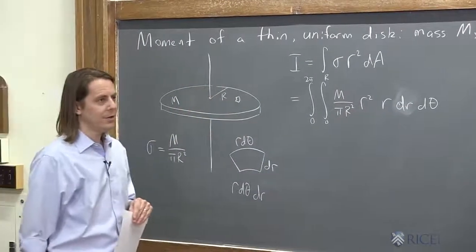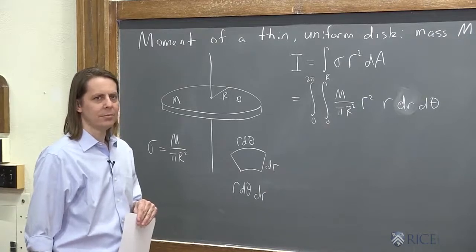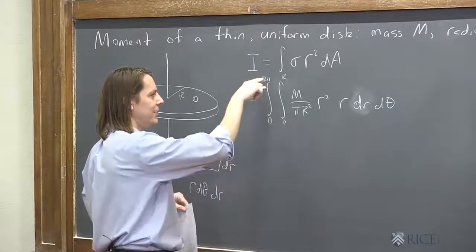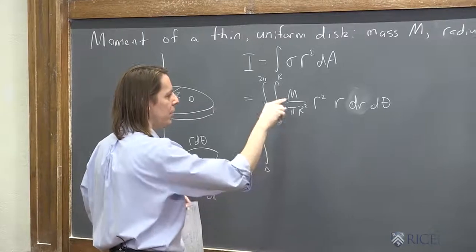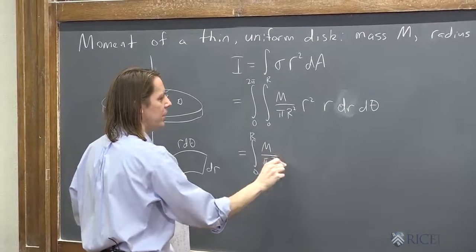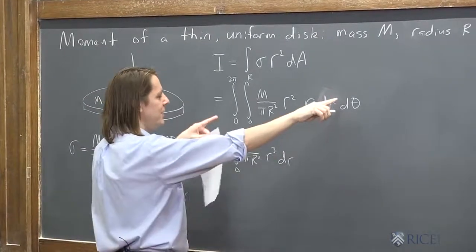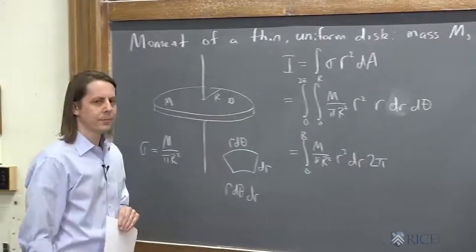So let's go ahead and do the theta integral. The integral of d theta is theta. Evaluate theta from 0 to 2 pi. Then it's just 2 pi. Theta evaluated at 2 pi is 2 pi minus theta at 0 is 0. So I'm going to save myself a little time. 0 to R, we keep the M, we keep the pi R squared constants. We'll combine these to make R cubed dR. But the integral of this was just a 2 pi, a factor of 2 pi.